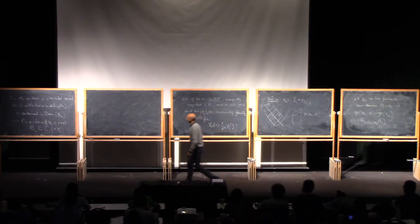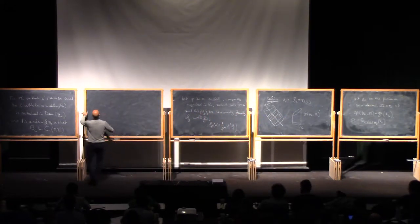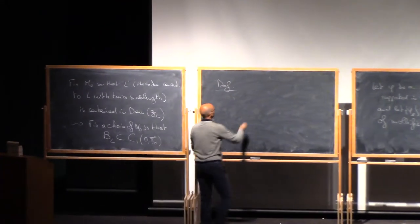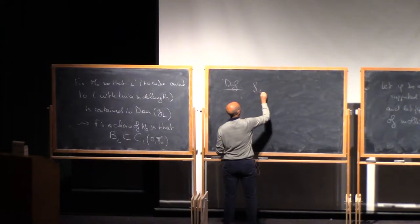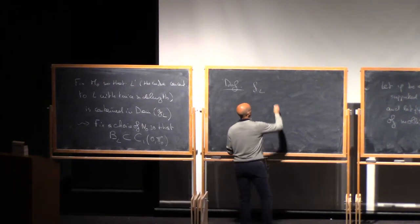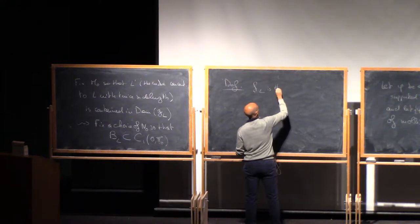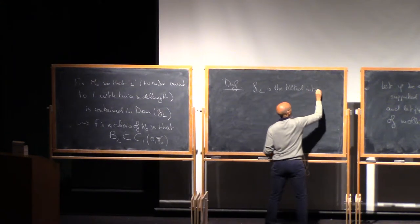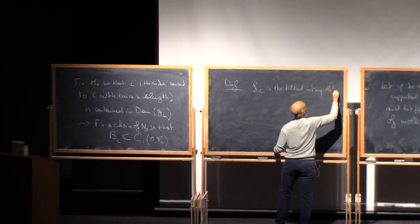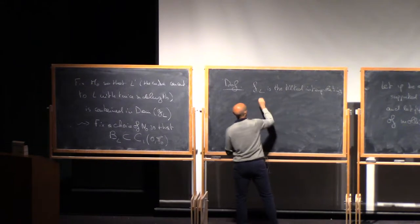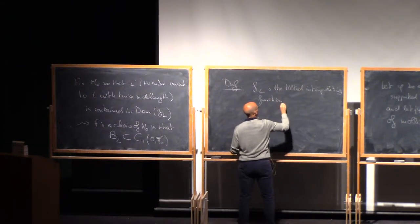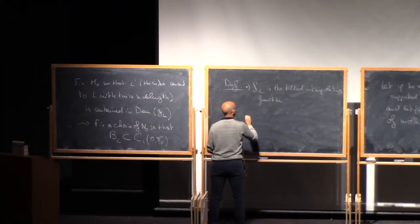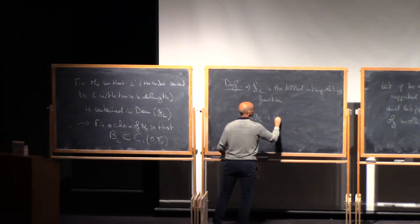So it's locally on cube L a good approximation of the function. I will take a partition of unity and glue all of these approximations together. F_L is called the tilted interpolating function relative to cube L, and G_L is the interpolating function.